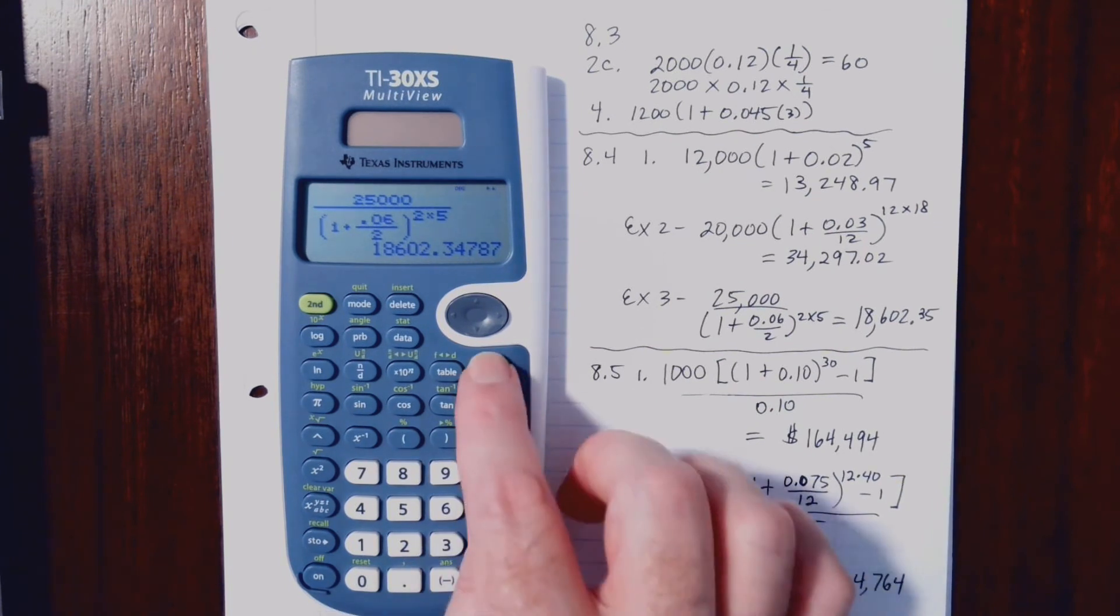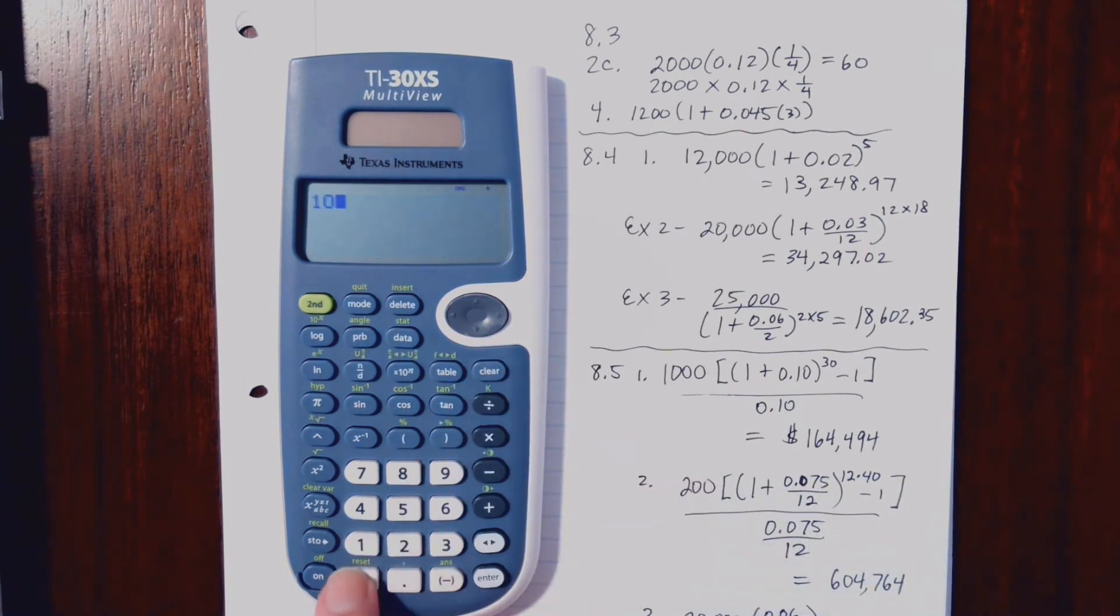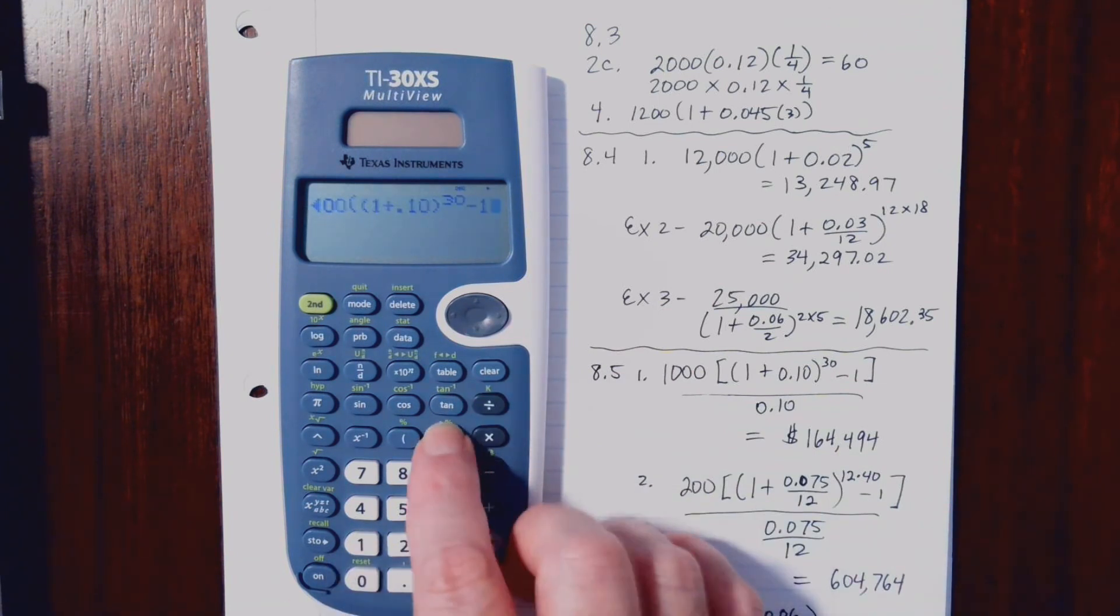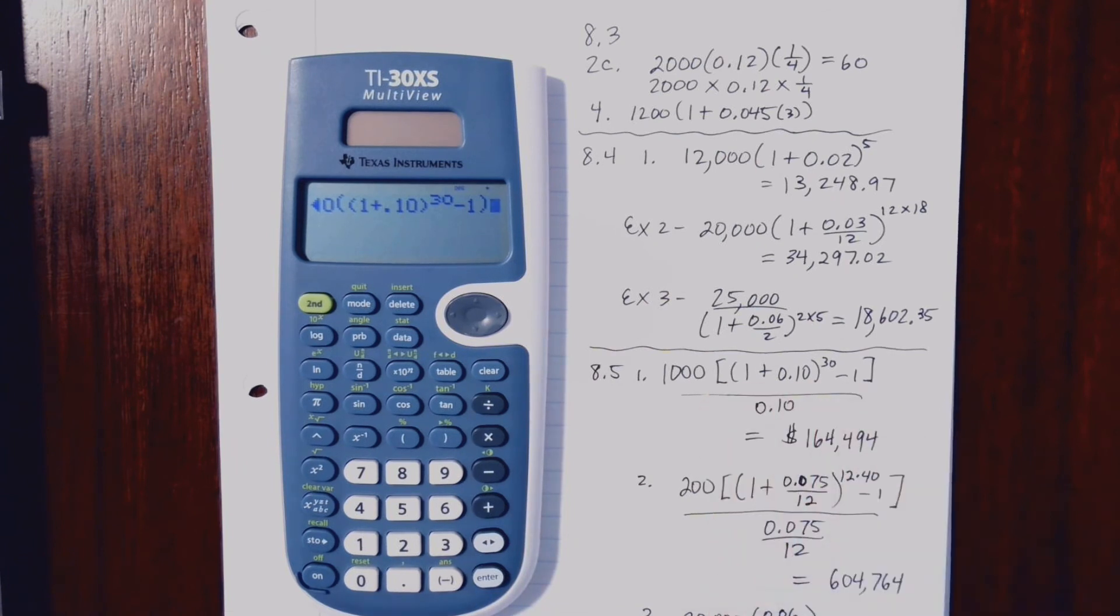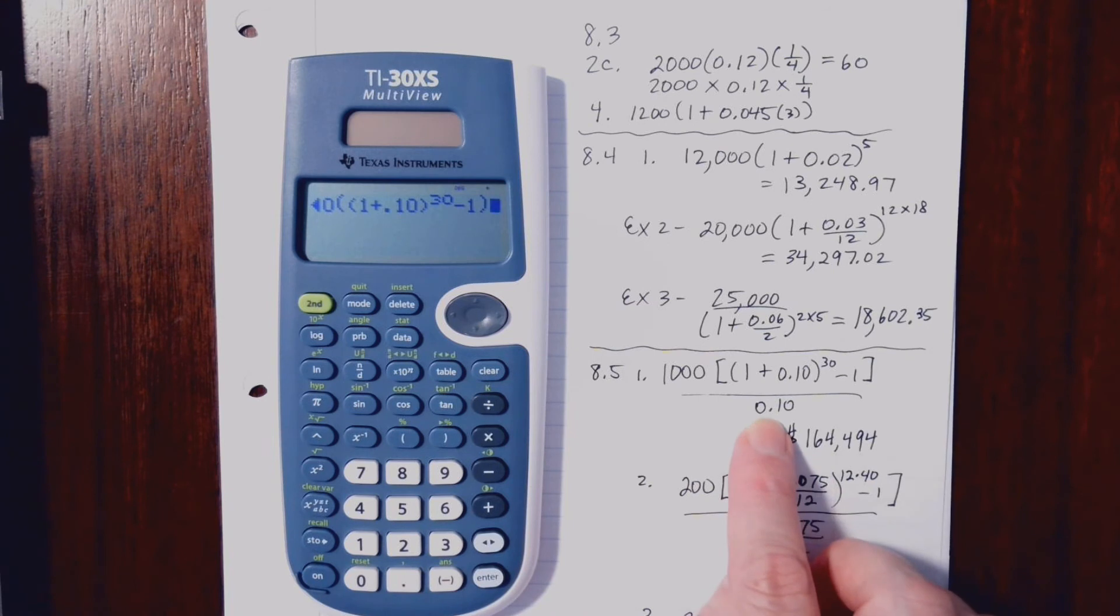So here we have 1,000, parenthesis, parenthesis, 1 plus .10. You can put another 0 in there if you want. Might as well do that. Parenthesis, and then exponent 30, and then minus 1. Don't forget your other parenthesis. That's closing this part here out. Bracket is the same as a parenthesis. It just makes things stand out a little bit better. Oh, and I messed up because I forgot to hit the fraction button first because I've got all this stuff.